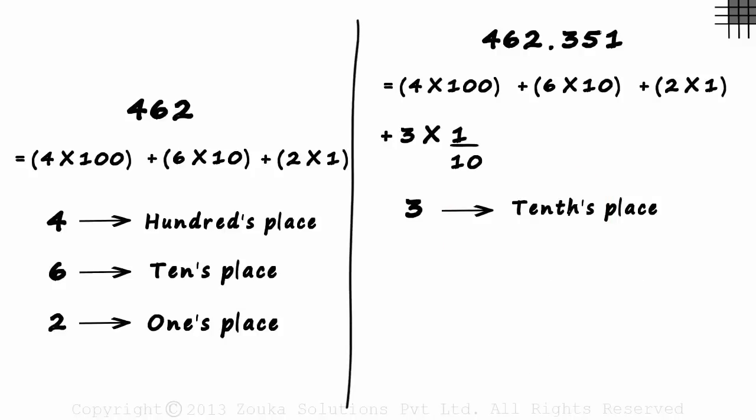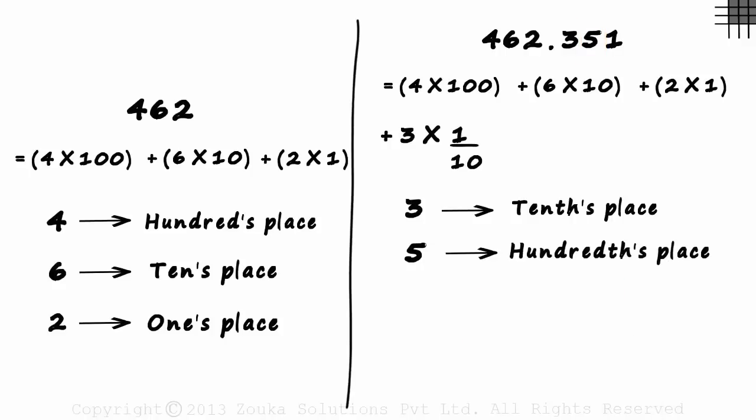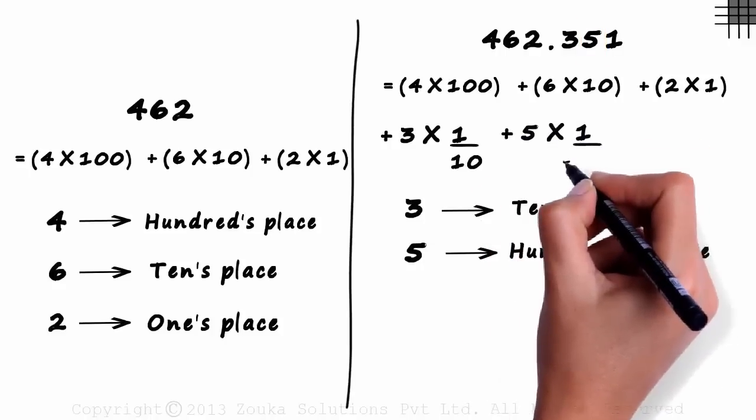The second digit to the right of the decimal point, which is 5, is in the hundredths place. Its value will be 5 times 1/100.